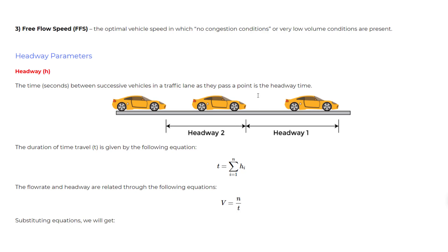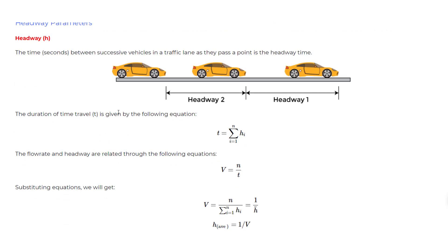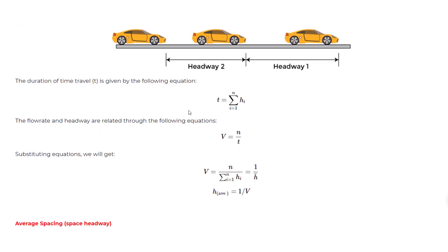For example, one car passes a measurement point, then the next car passes that point a certain time afterward. Using the figure, the headway is the time it takes to travel the spacing distance between successive vehicles. Headway has units of seconds. The total duration of time travel t for a segment is the summation of all individual headways — that's your total time duration for the segment being analyzed.